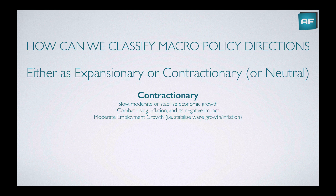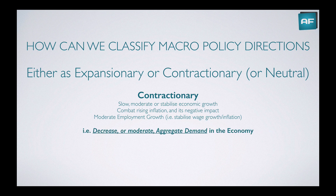With contractionary policy, we're trying to slow, moderate, or stabilize economic growth. We could also combat rising inflation and its negative impact. The negative impacts of rising inflation are very pervasive. Sometimes we have to moderate employment growth and destabilized wage growth, or the inflation caused by wage growth. As the opposite to expansionary, we're trying to decrease or moderate aggregate demand in the economy.